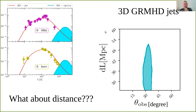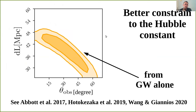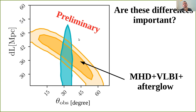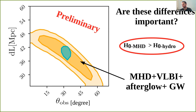From our modeling, the distance is correlated with the viewing angle. From afterglow modeling of jets you can precisely find the viewing angle, but you don't know the distance well because it is correlated with the jet energy. If you combine this with the gravitational wave observation, you can nail down the Hubble constant better. Using the gravitational wave information as priors, we can get a better constraint on the distance from the viewing angle constraint of the jet, significantly improving the Hubble constant estimation.